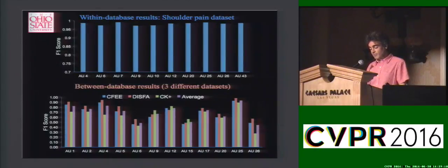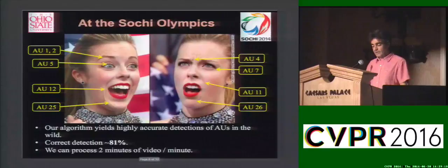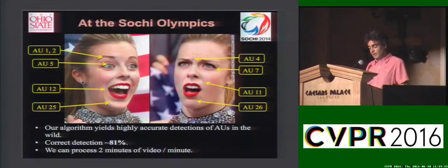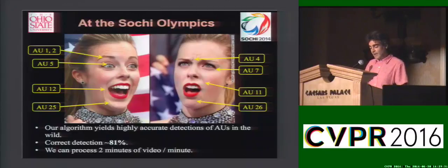Note that in this case the image conditions in these databases vary tremendously, yet the F1 scores are still very high. The resulting algorithm can now be used to detect AUs in facial expressions in the wild, as shown here using two images of the Sochi Olympics. These images have been automatically annotated by our algorithm. In fact, our algorithm's correct detection rate in images in the wild is about 81% correct, and moreover our algorithm runs faster than real time.